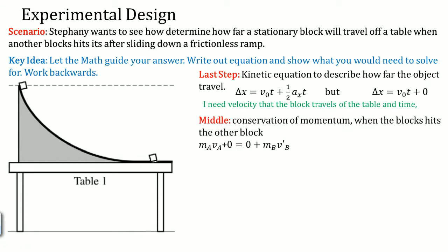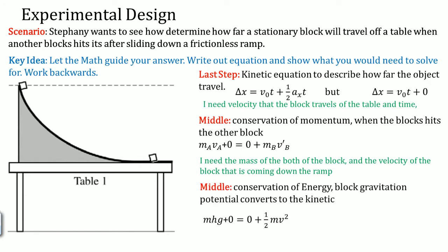When things collide, we use conservation of momentum. We can say that when the block hits each other, it's an elastic collision because it's a block hitting another block that is at rest. It's going to be equal to one block that is not at rest. The other block is going to fly out. At the start, you're going to need the mass of both of the blocks and the velocity of the block that comes down the ramp.